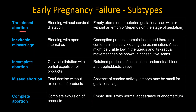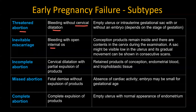Threatened abortion is when there is bleeding but no cervical dilatation. On ultrasound, you may see an empty uterus or an intrauterine gestational sac with or without an embryo, and there may be peri-gestational hemorrhage. Similar findings with an open internal os — sometimes with hemorrhage or the sac in the lower endometrium or endocervix — would suggest inevitable miscarriage, meaning this is going to progress to a miscarriage.